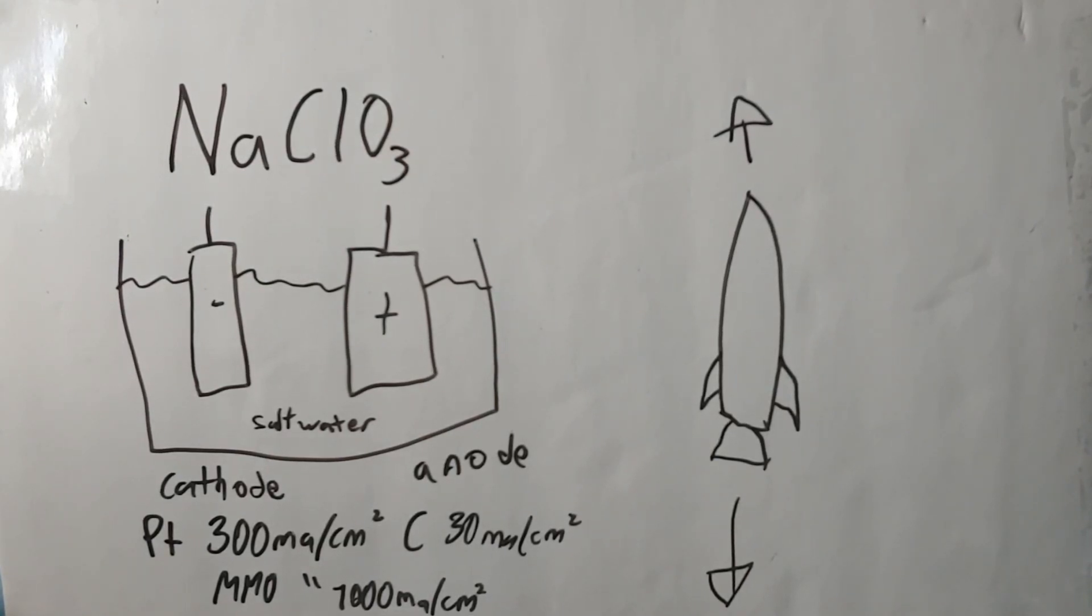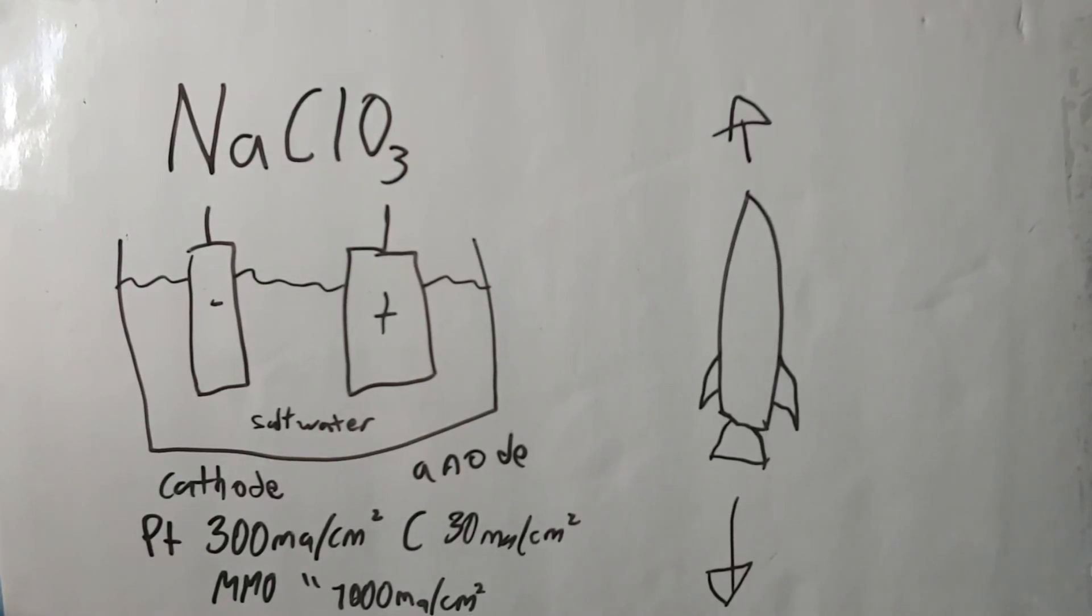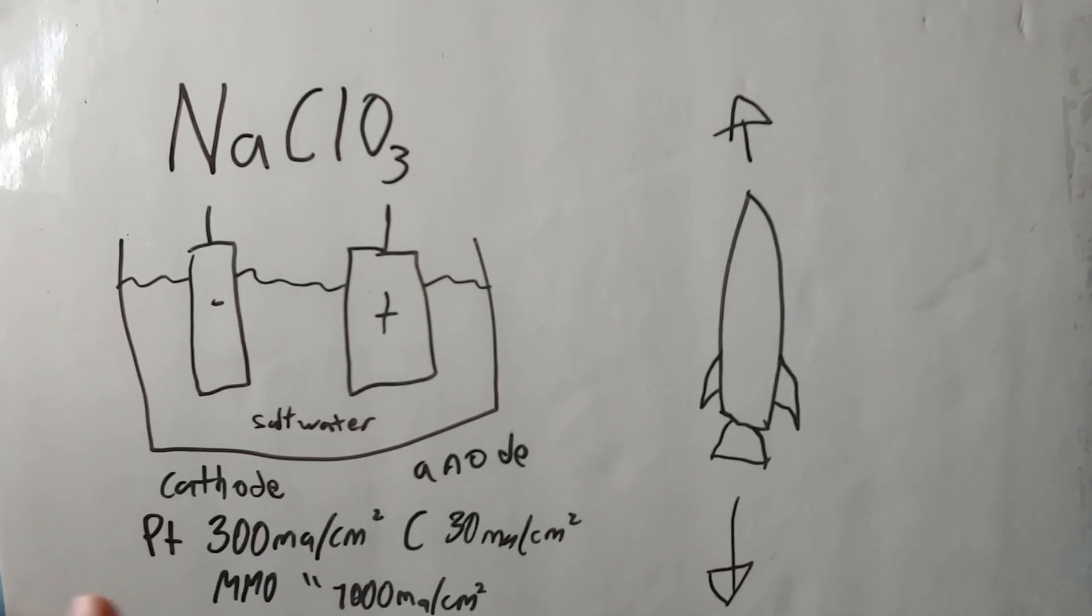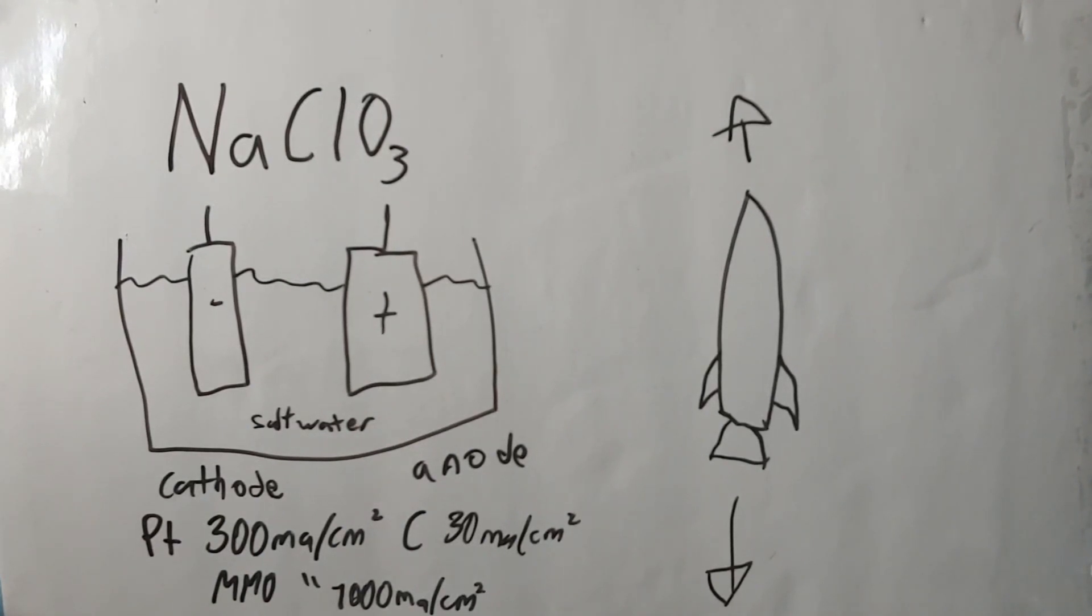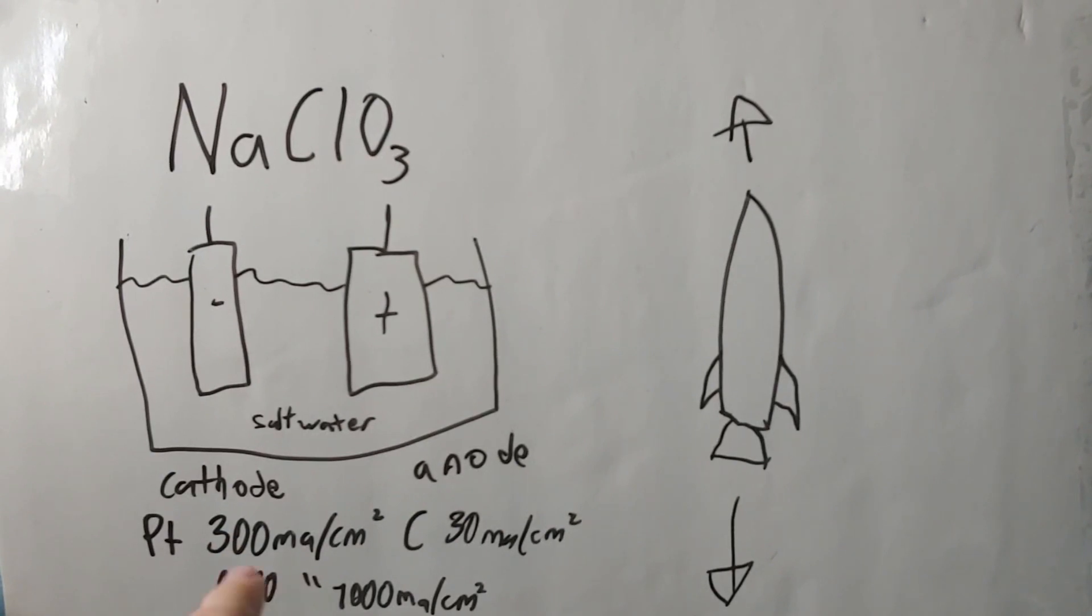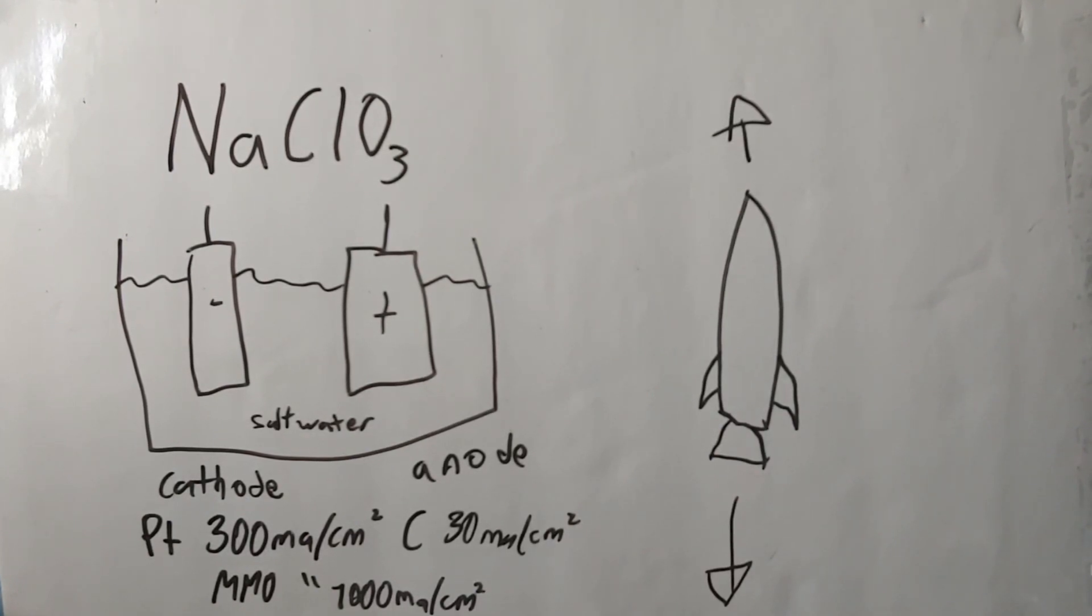But then we have MMO, mixed metal oxide, at 1000 milliamps per square centimeter. The difference between platinum and MMO is absolutely not linear. See? This thing over here costs twice the price, but it's nearly got 4 times the current density. Or, well, 3 times I guess would be closer. So, it's definitely a good deal, but I can't afford that deal. Nor can I afford to risk buying a fake one from China. So, I'm gonna have to stick with the platinum I have.